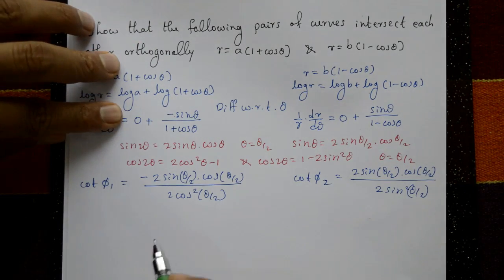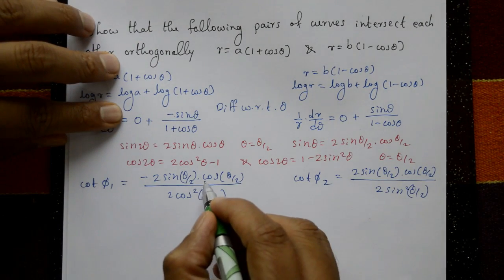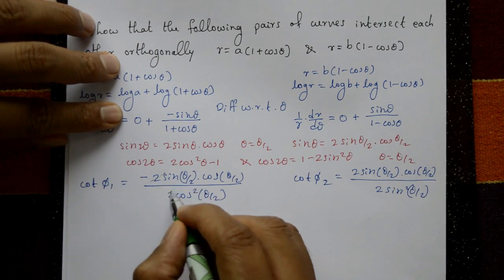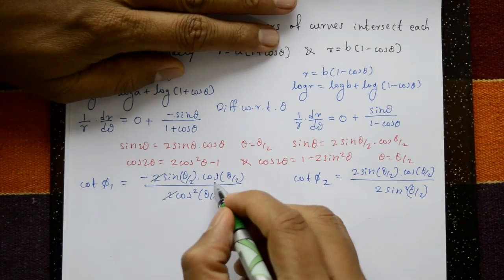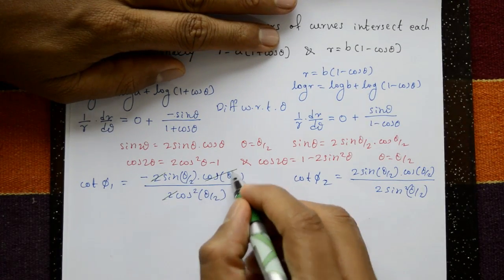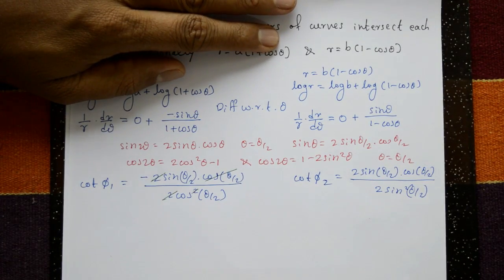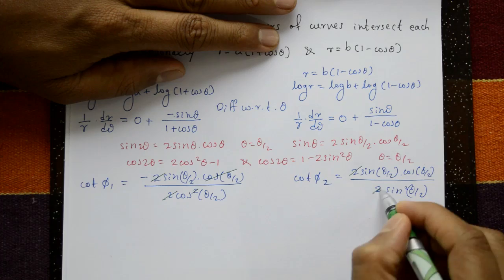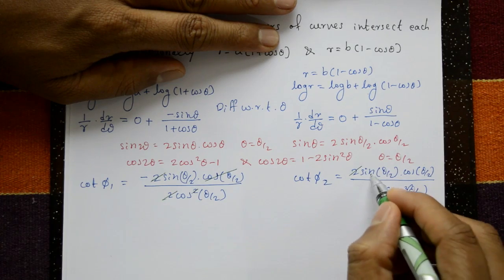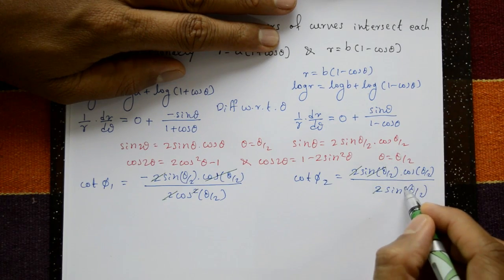Now simplify: in the first curve the 2 and 2 cancel, and cos(θ/2) cancels, giving minus tan(θ/2). In the second curve the 2 and 2 cancel, and sin(θ/2) cancels, giving cot(θ/2).